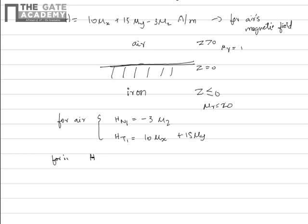For iron, it would be H_N2 and H_T2 as the two components. The total magnetic field can be found as H_N2 plus H_T2. We have to find out the magnetic flux density.